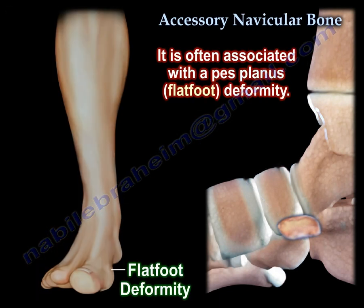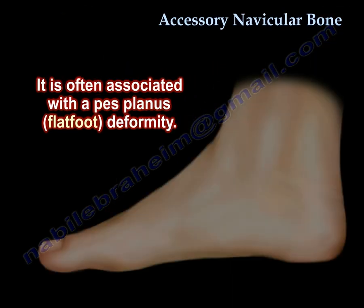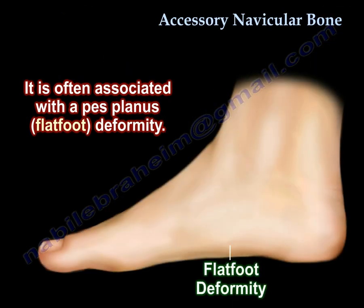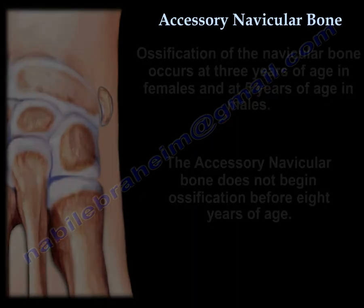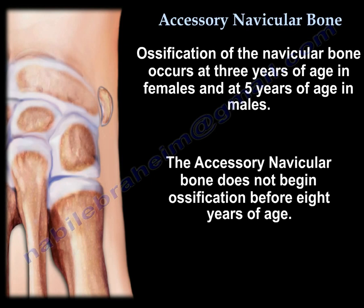It is often associated with a pes planus deformity. Ossification of the navicular bone occurs at 3 years of age in females and at 5 years of age in males. The accessory navicular bone, on the other hand, does not begin ossification before 8 years of age.